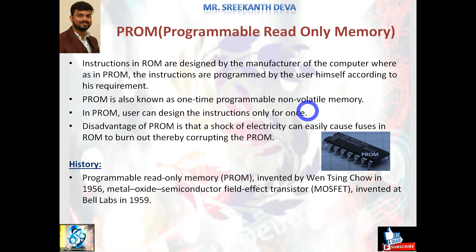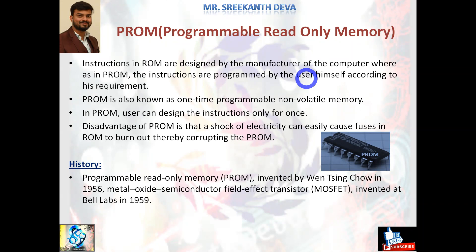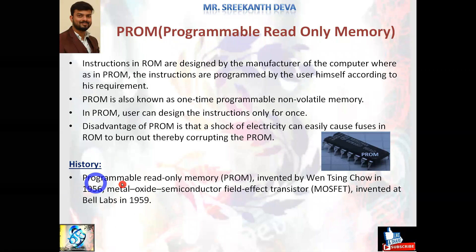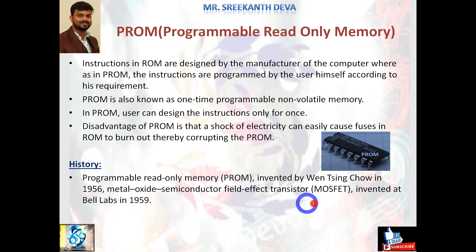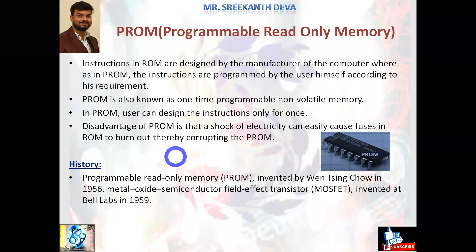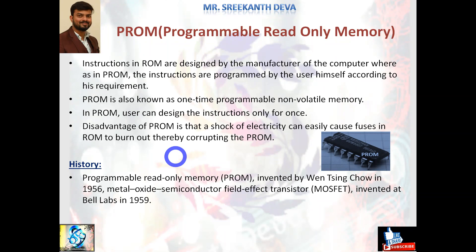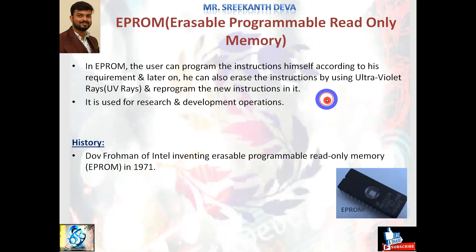A major disadvantage of PROM is that a shock of electricity can easily cause fuses in ROM to burn out, thereby corrupting the PROM. PROM is generally used in cell phones, video games, consoles, medical devices, and RFID tags. Programmable read-only memory PROM was invented by Wen Tsing Chow in 1956. MOSFET was invented at Bell Labs in 1959. PROM is manufactured as blank memory and programmed after manufacturing using a special tool called a programmer.